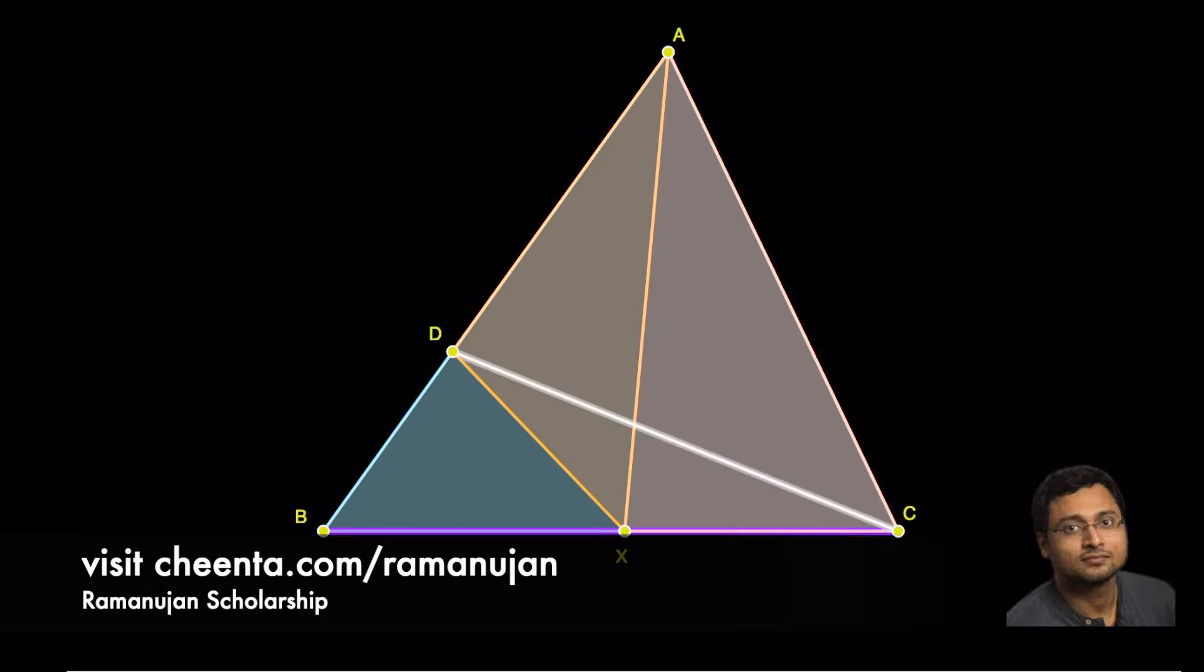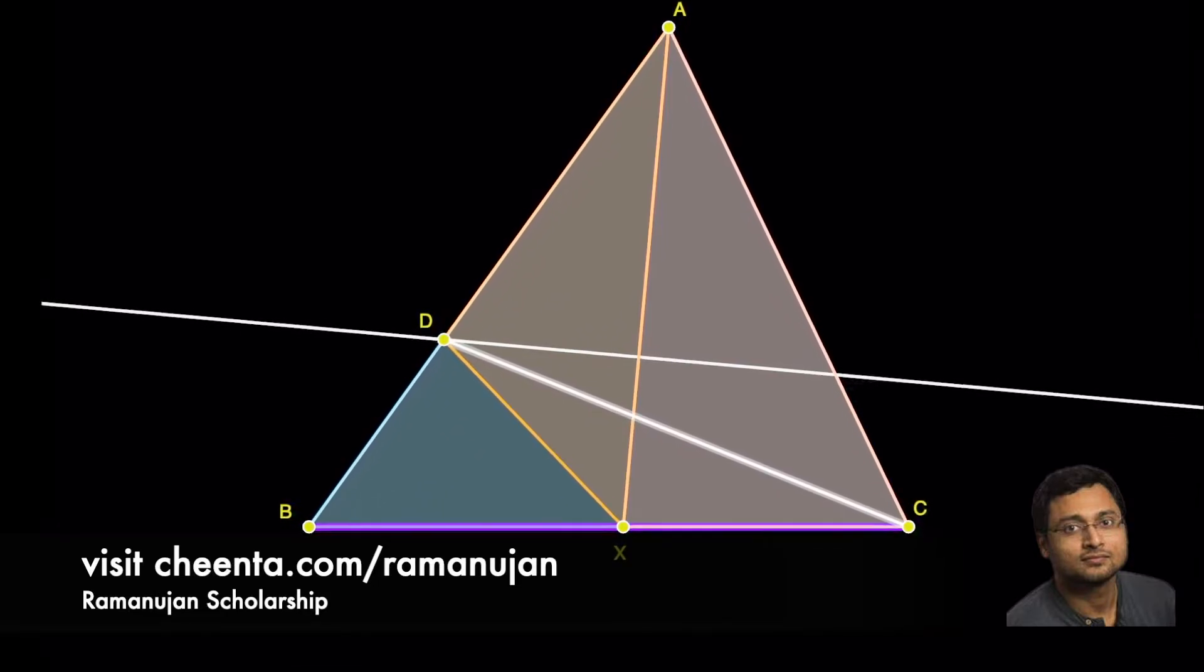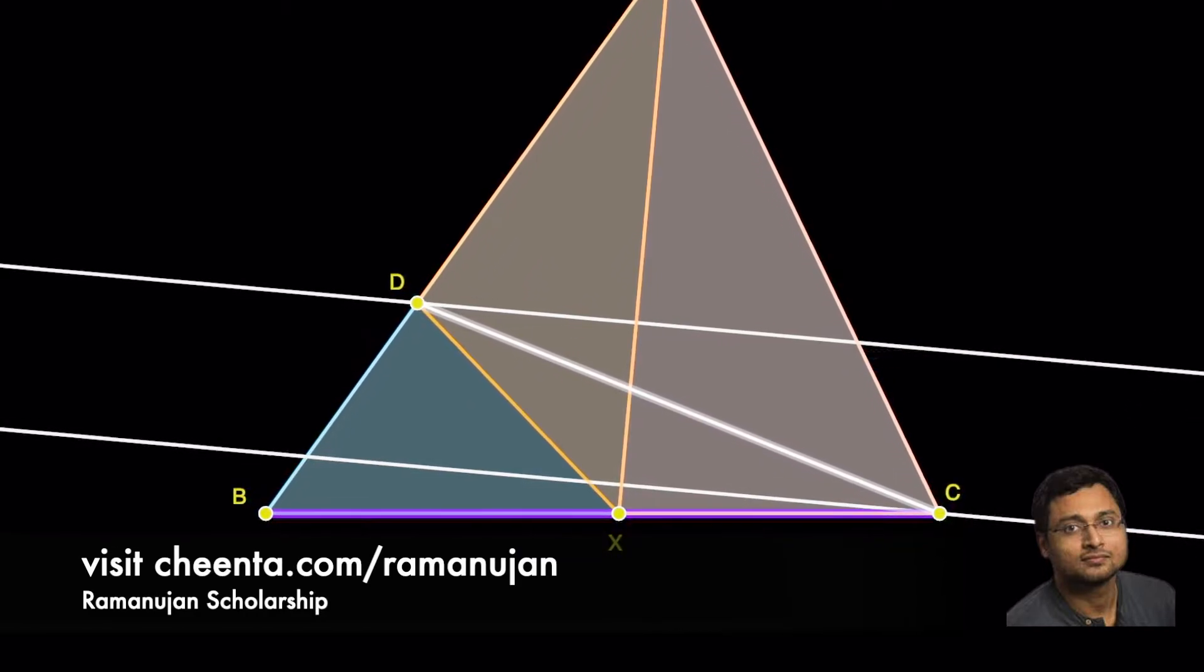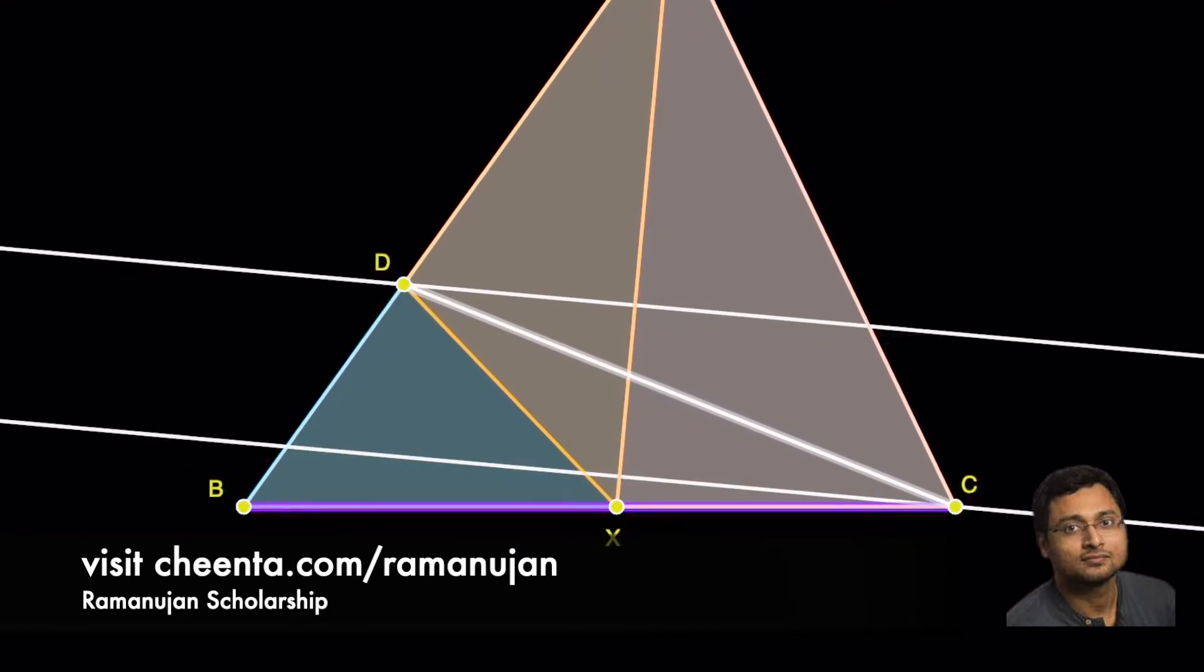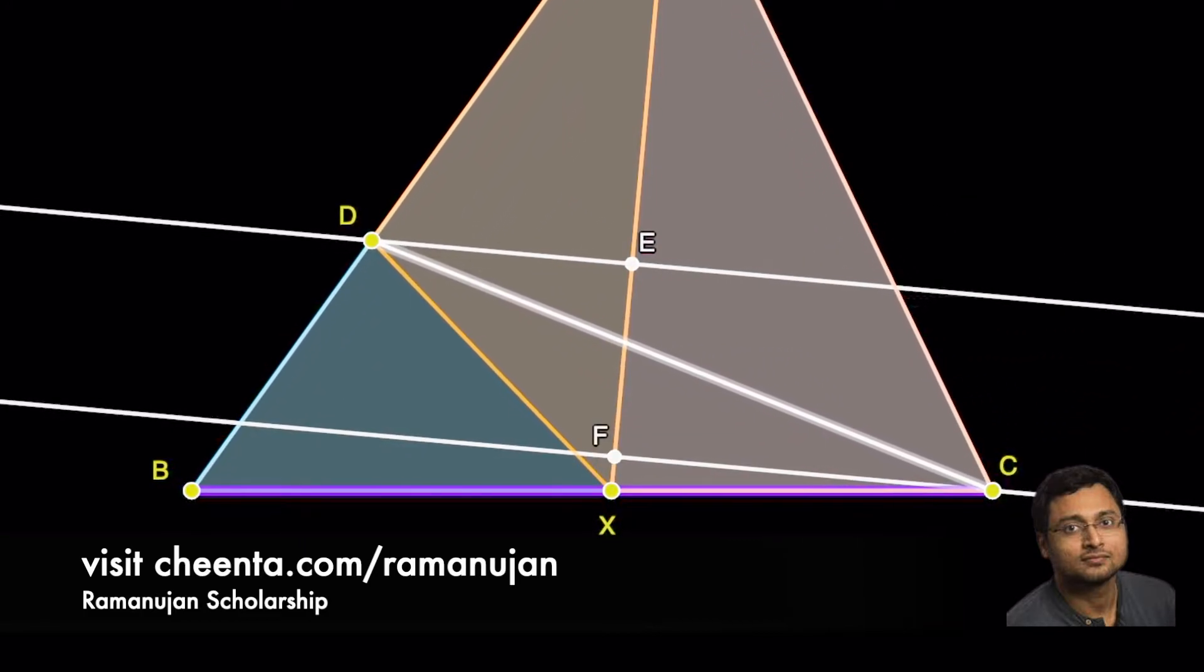So, let's join DC and let's drop perpendiculars from D and C on AX. Suppose these perpendicular lines meet AX at E and F.